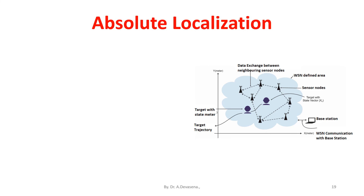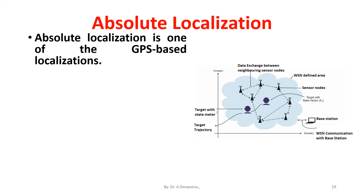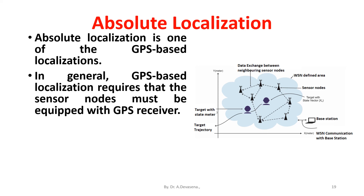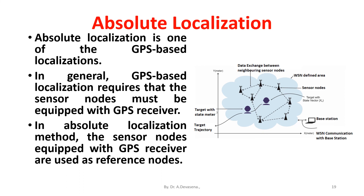Absolute localization is one of the GPS-based localizations. In general, GPS-based localization requires that the sensor nodes must be equipped with a GPS receiver. In the absolute localization method, sensor nodes equipped with GPS receivers are used as reference nodes, and an absolute coordinate system is defined by these reference nodes.